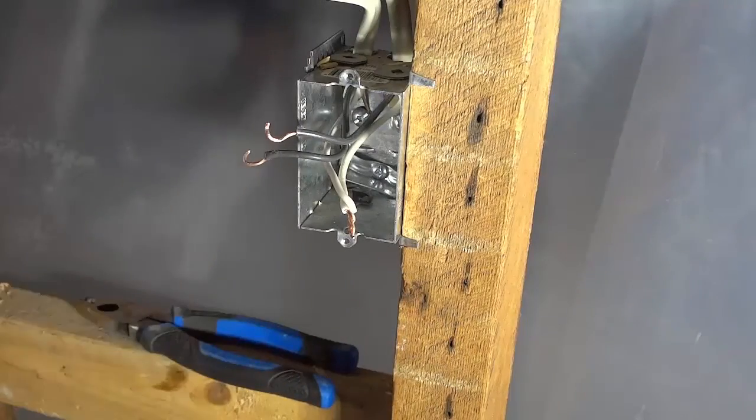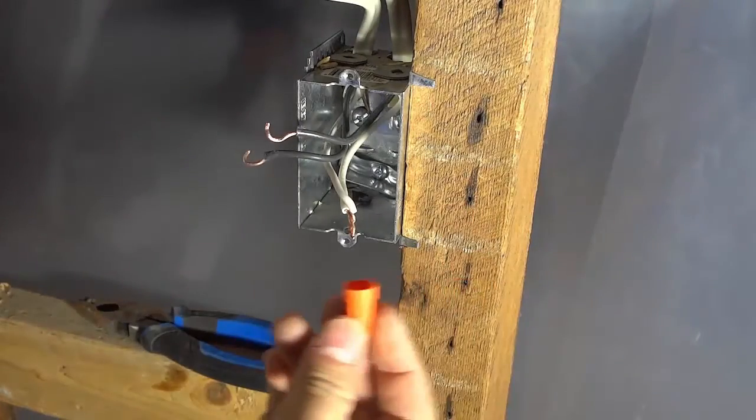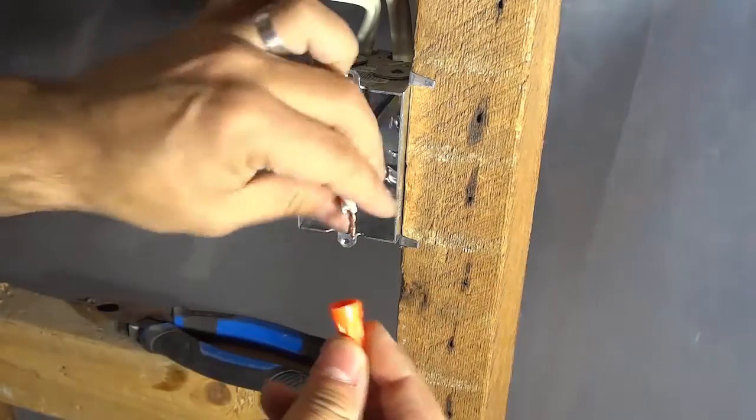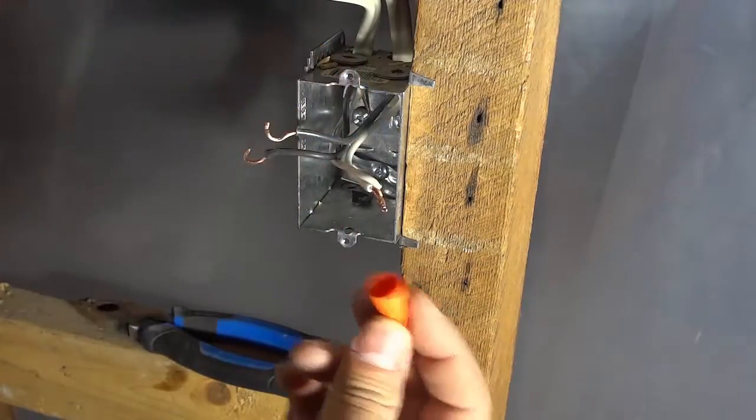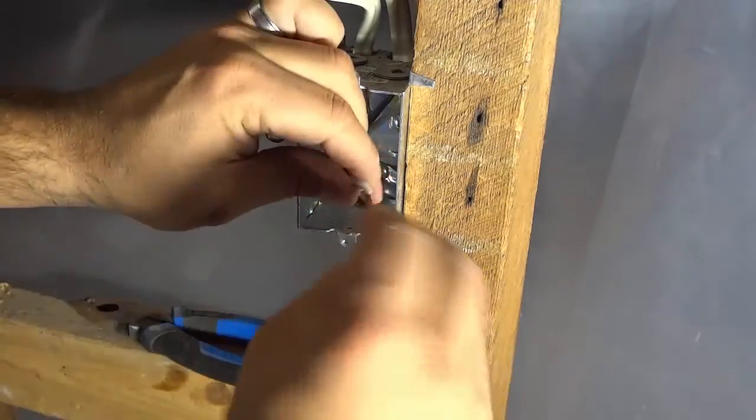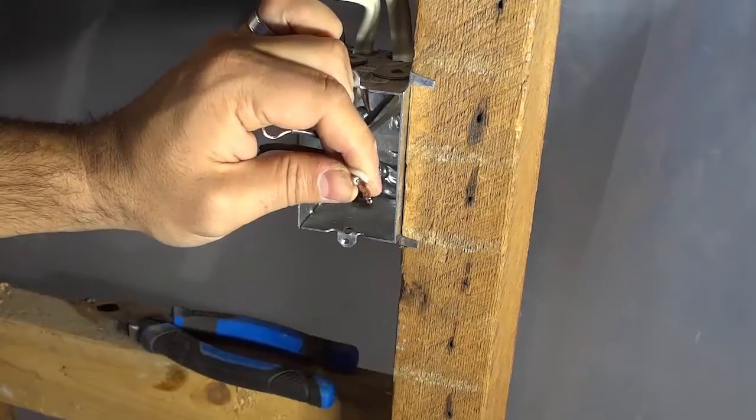And then what you want to do is get a moret or a wire nut, whatever you call this. It goes by both names. And you want to take this and twist it clockwise onto those two neutral wires.